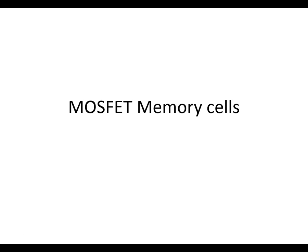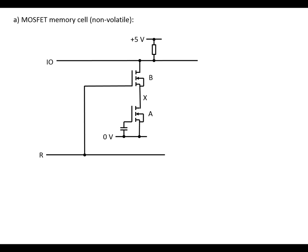MOSFET memory cells. Here's an example of a non-volatile memory cell. The reason it's non-volatile is the charge that's stored on the capacitor here stays on the capacitor. There's no way for it to charge or discharge through the gate because of the infinite impedance of the gate. I won't talk about how we change the charge on this — I'll just talk about how this works.